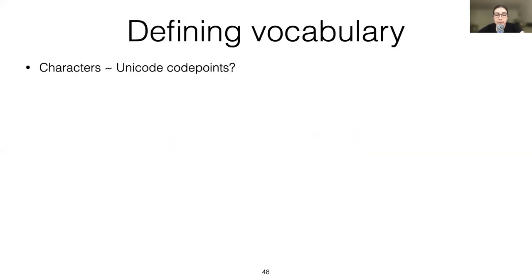When describing the model, I was talking about characters, but in fact we are working with Unicode code points. For Russian and even for Arabic, that's perfectly fine. But for South Asian languages like Kannada, there is a whole other set of challenges associated with Unicode, which is again why our formalism isn't language independent.